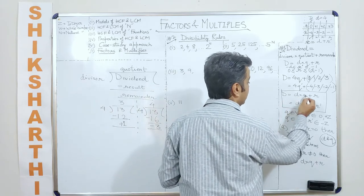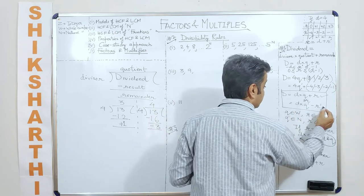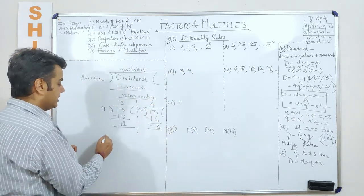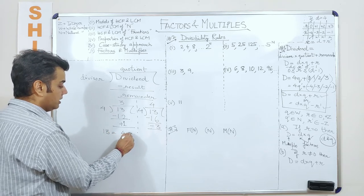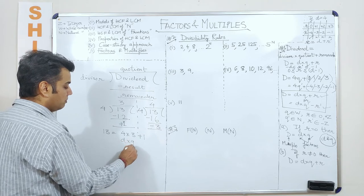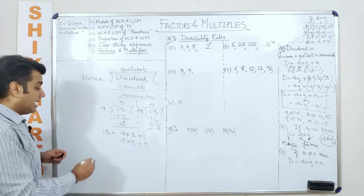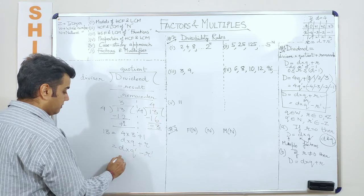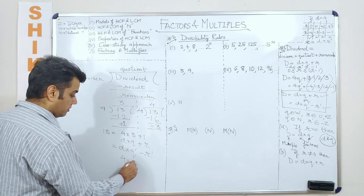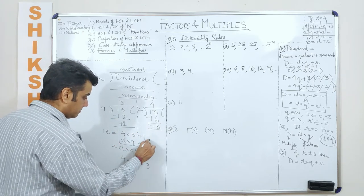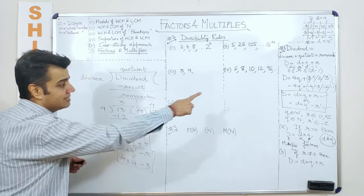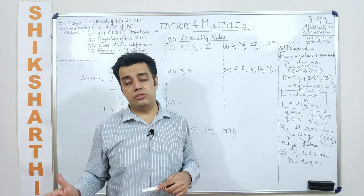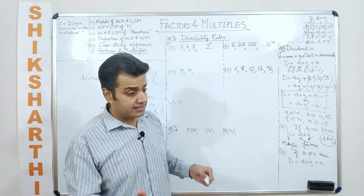Taking this discussion forward, when dividing a number by d, the first expression is D = d·q + r (positive remainder format), and the second is D = d·q' − r' (negative remainder format). For example, 13 = 4 × 3 + 1, and also 13 = 4 × 4 − 3. Both expressions are valid. If something is unclear, re-watch the topic — it becomes easier the second time.